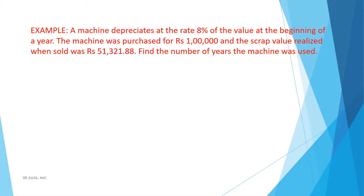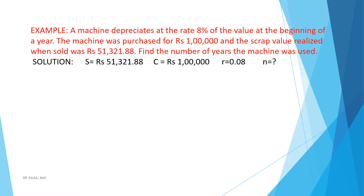Next example: A machine depreciates at a rate of 8% of the value at the beginning of a year. The machine was purchased for Rs 1,00,000 and the scrap value when sold was Rs 51,321.88. Find the number of years the machine was used. In this example, C is Rs 1,00,000, S is Rs 51,321.88.